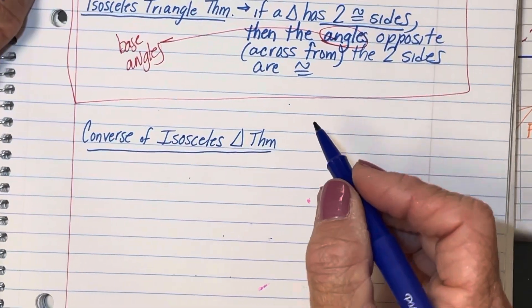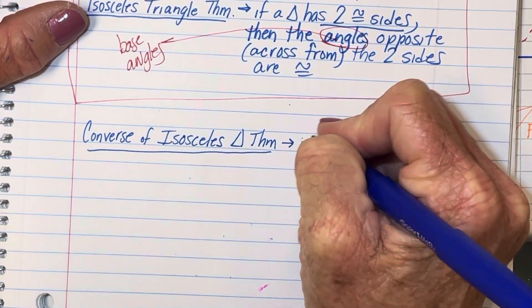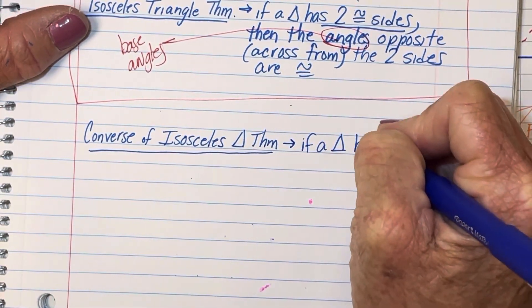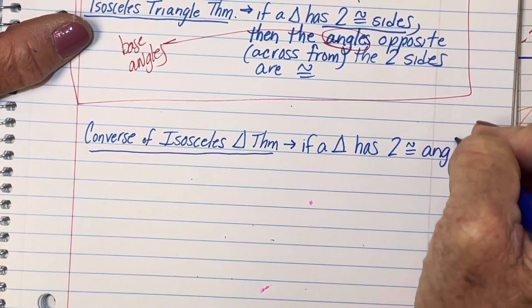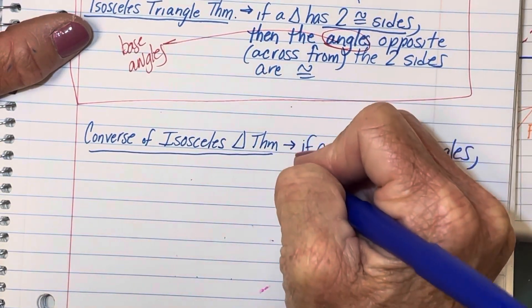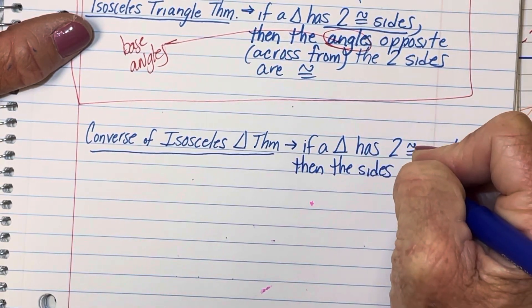So let's just write this down, and we'll draw just a quick illustration. So if a triangle has two congruent angles, so those would be the base angles, then the sides opposite those angles are congruent.